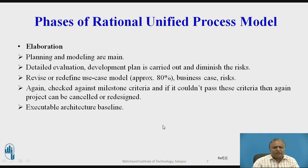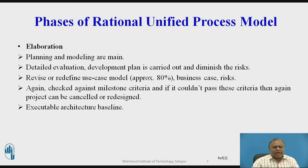The next phase is Elaboration phase. In this phase, planning and modeling are the main activities. Detailed evaluation and development plan is carried out and risks are diminished, so most of the risks are eliminated in this process model. The use case model is revised or redefined, addressing approximately 80% of business case risks. Again, checked against the Milestone criteria, and if it couldn't pass, the project can be cancelled or redesigned. Executable architecture is the baseline for this Rational Unified Process model.